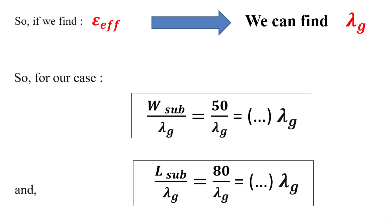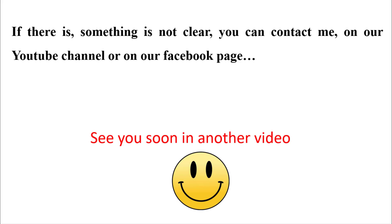This is the method used to find the dimensions of any structure like antennas, filters, couplers, and power dividers. We find lambda g or lambda zero and then express our dimensions in function of lambda g or lambda zero. If something is not clear, you can contact us on our YouTube channel or Facebook page. See you soon in another video, good luck!